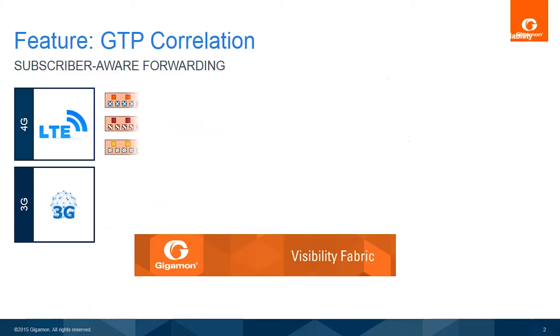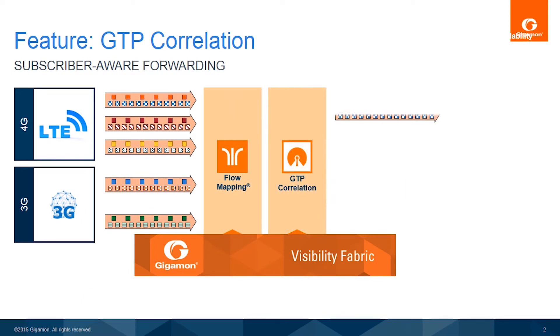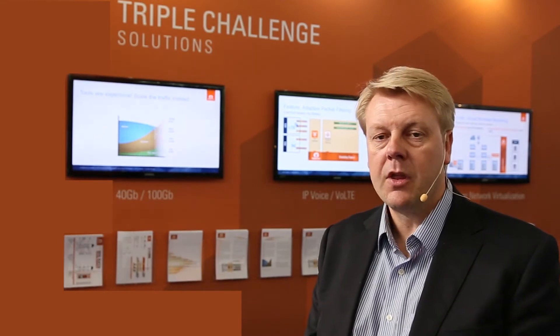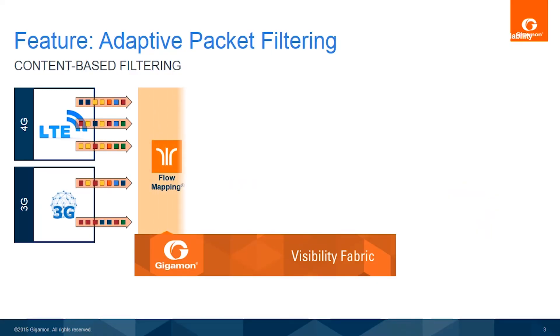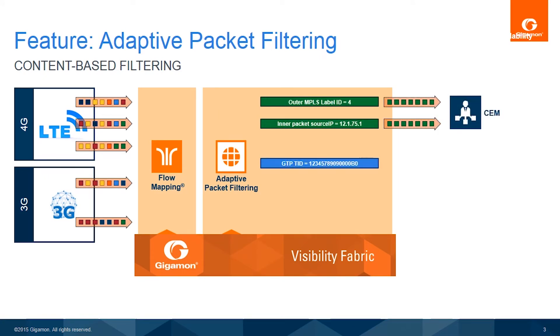At Gigamon we have a number of features. GTP correlation allows you to correlate the user plane with the data plane, and then forward the correlated packets onto the correct tool — a voice over IP tool, a mean opinion score tool, something like this. We also have APF, Adaptive Packet Filtering, that allows the carrier to focus in and correlate the body of the packet to the header of the packet.